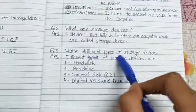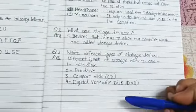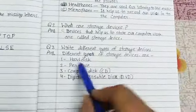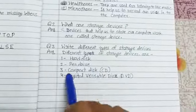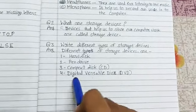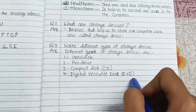Different types of storage devices are: hard disk, pen drive, compact disk, and digital versatile disk. Now worksheet number three: unscramble the words and write down the correct words.